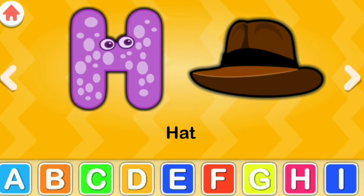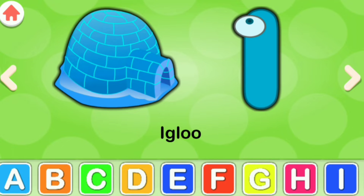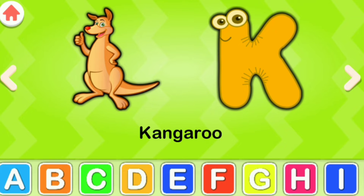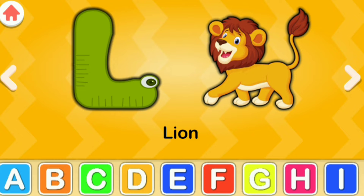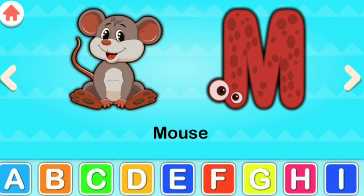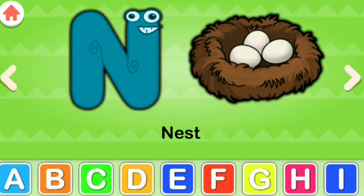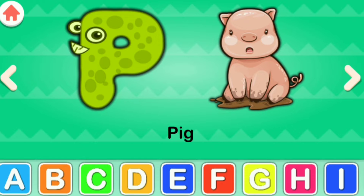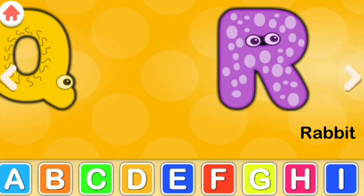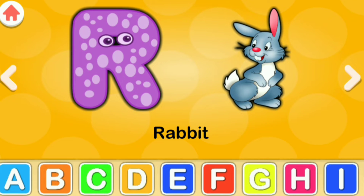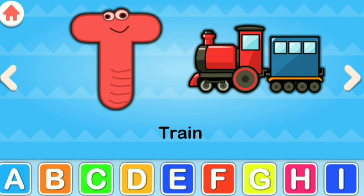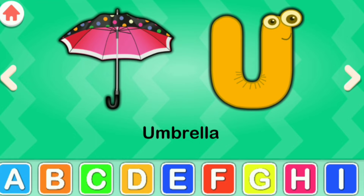I for Igloo, J for Joker, K for Kangaroo, L for Lion, M for Mouse, N for Nest, O for Owl, P for Pig, Q for Queen, R for Rabbit, S for Sun, T for Train, U for Umbrella.